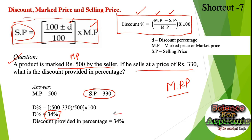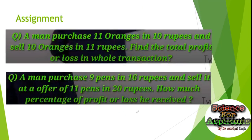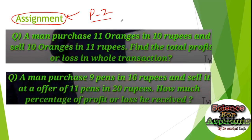I hope you found these tricks useful for solving profit, loss, and discount problems. Today's assignment: A man purchases 11 oranges for 10 rupees and sells 10 oranges for 11 rupees — find the total profit or loss percentage. This will be discussed in part 2. Till then, goodbye, take care.